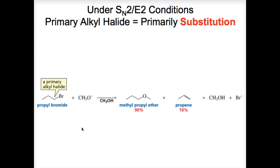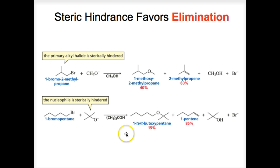An example: under SN2/E2 conditions with a primary alkyl halide, 90% is the substitution product from SN2 and 10% is the elimination product. However, if the primary alkyl halide or the nucleophile/base is sterically hindered, the nucleophile cannot do a backside attack on the alpha carbon, but will instead remove the more accessible proton — elimination wins and the alkene product predominates. Two examples show a sterically hindered primary alkyl halide and a sterically hindered base both resulting in the elimination product predominating.